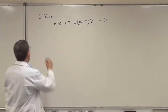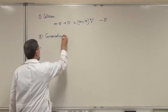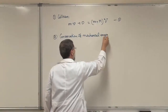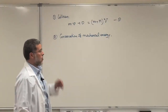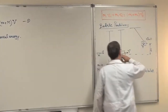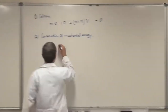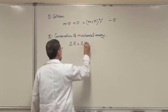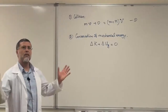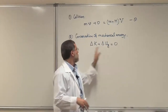The second concept is conservation of mechanical energy. Mechanical energy is conserved here because the tension force is normal to the motion and does no work. We assume no friction and negligible air resistance, no applied force. So we write: ΔK + ΔU_G = 0.